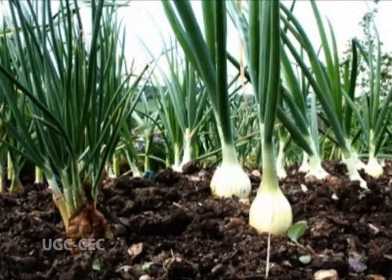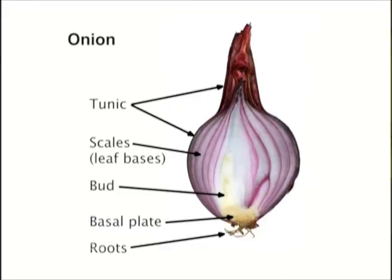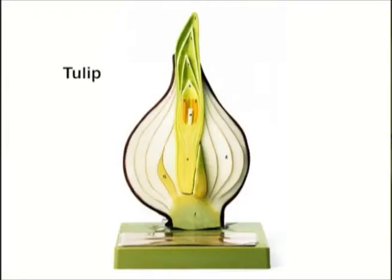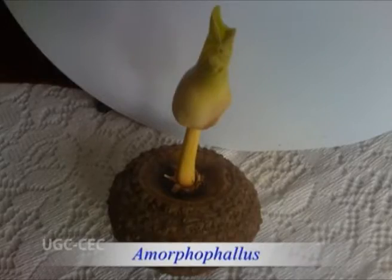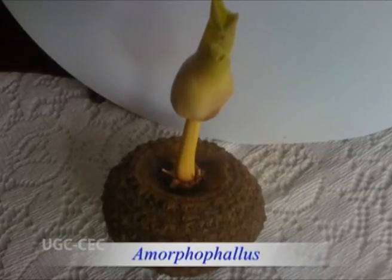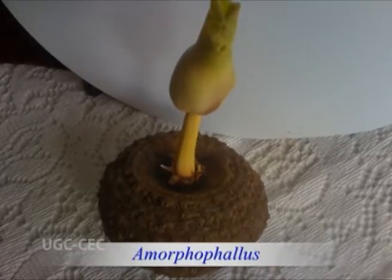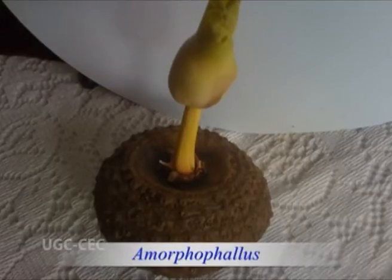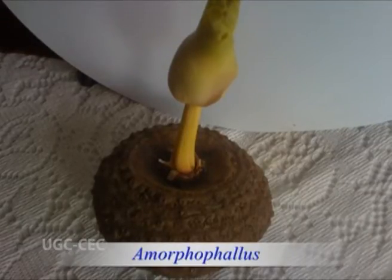A bulb is an underground stem consisting of a shortened, convex or slightly conical stem with a terminal bud and numerous scale leaves. The scale leaves may surround the stem in concentric rings, called tunicated or coated, as in onion, or the scales may partially overlap each other by their margins only, called scaly, as in tulip. A corm is a condensed form of rhizome consisting of a stout, solid, fleshy underground stem growing vertically. It is more or less round in shape, often somewhat flattened, and contains a heavy deposit of food material — for example, Amorphophallus and Crocus.